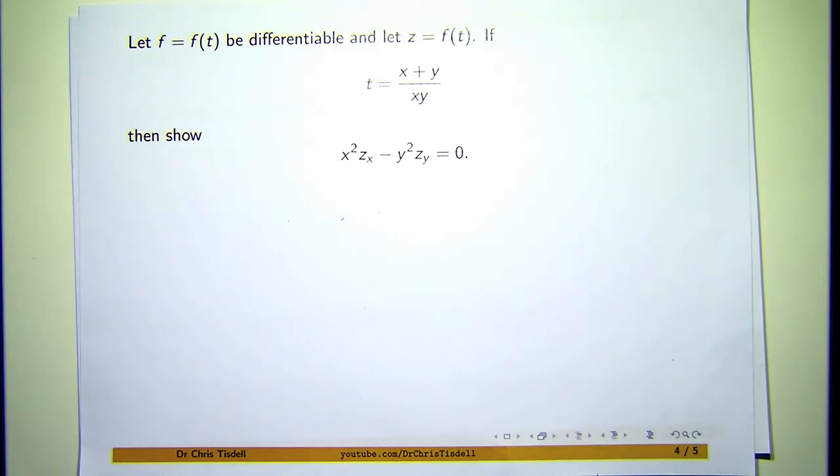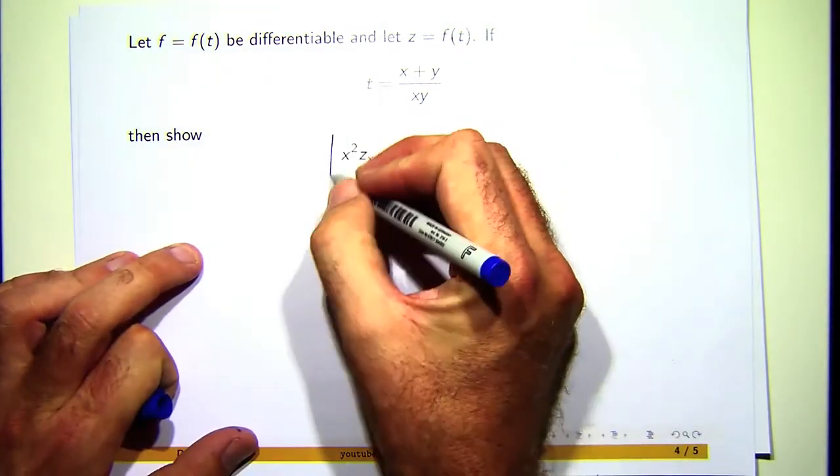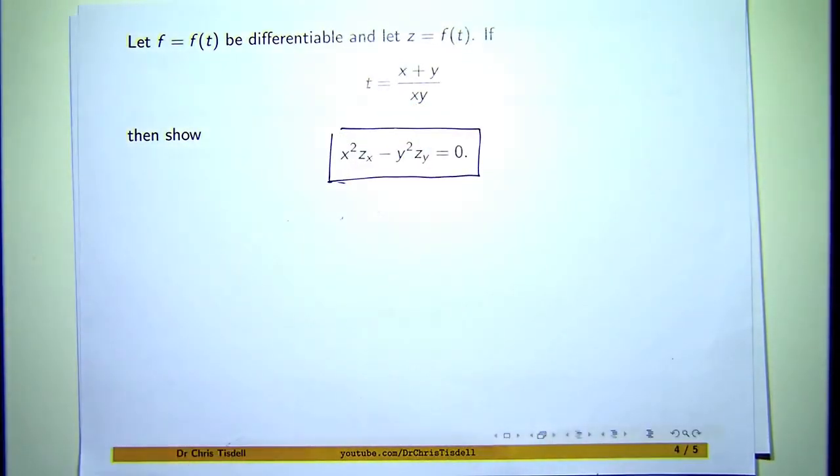Okay, so here's our PDE. The subscripts mean partial derivative, so z sub x means dz/dx, z sub y means dz/dy. And we're told that z is a differentiable function of one variable t, and that t variable actually depends on two things: it depends on x and depends on y. So we're asked to show that under those conditions, f satisfies this PDE.